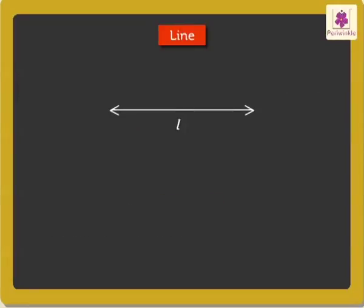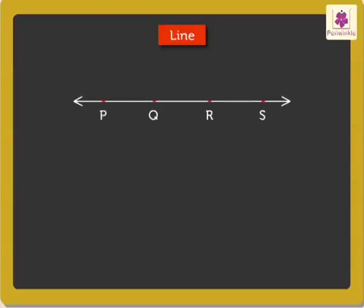Look at this line. We can also name and read the line by a single small letter. For example, Line L. Here, points P, Q, R and S are named on a line. This line can be read using any two points: Line PQ, Line PR, Line PS, Line QR, Line QS or Line RS.